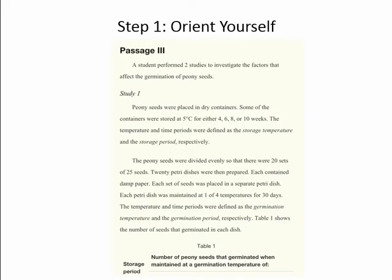Let's illustrate this by taking a quick look at the sample passage available for free on the official ACT student website. Often the scientific situation is provided at the very beginning of the passage. Here it is: 'A student performed two studies to investigate the factors that affect the germination of peony seeds.' What's actually being tested is often concentrated at the end of the information — each petri dish was maintained at one of four temperatures for 30 days, and Table 1 shows the number of seeds that germinated in each dish. So we can guess we're looking at what's the best temperature to germinate these seeds.